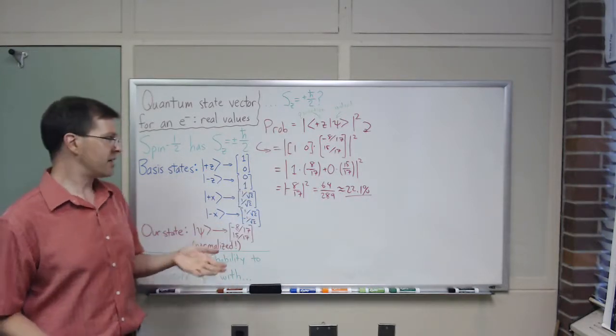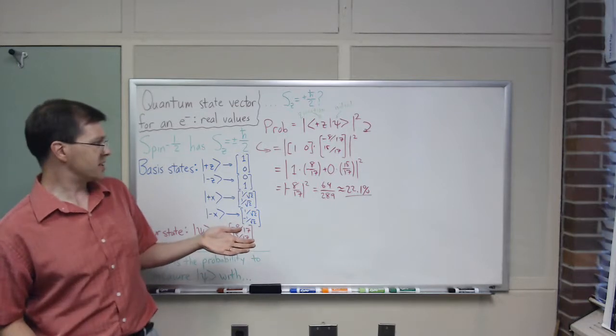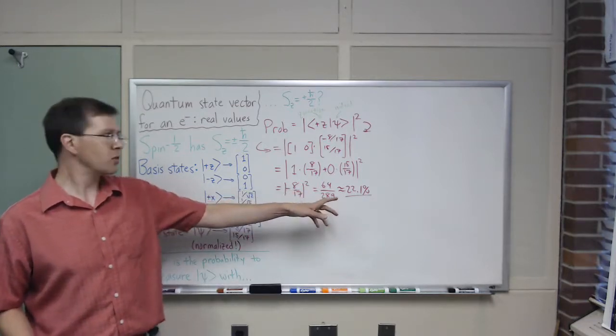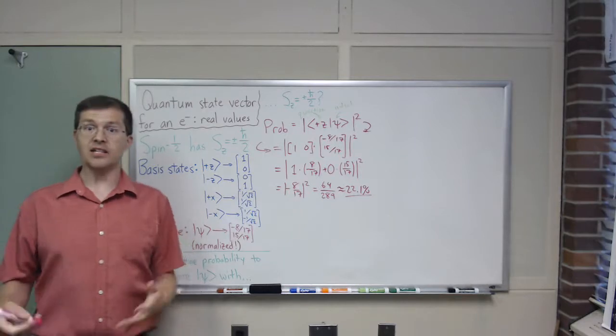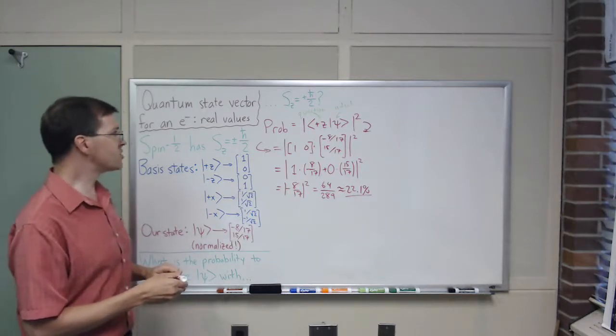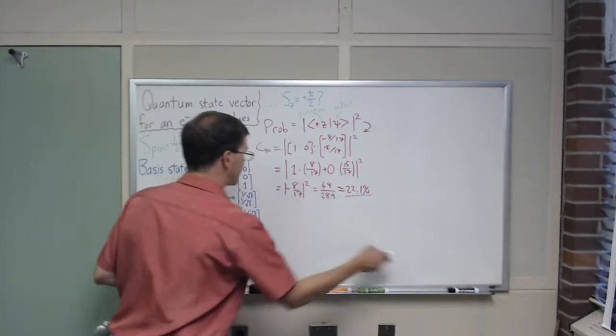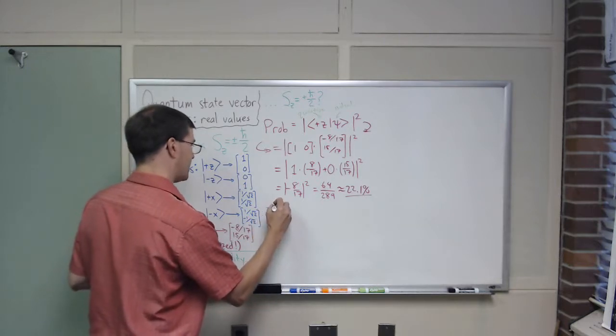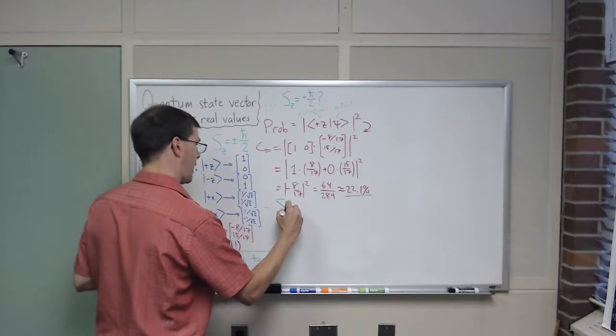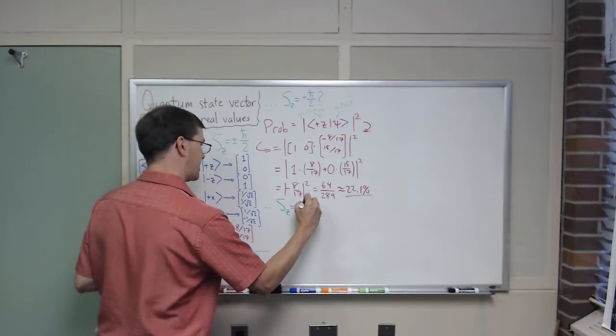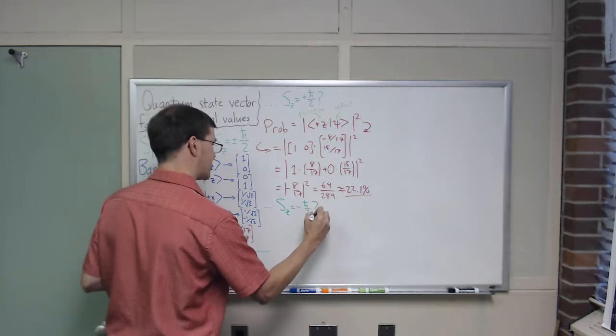Now you might say, hey, doesn't that immediately mean that, what is it, 78% or so, 77.9% will give me minus z? It does, but we can check that. Let's do that question, let's ask that question, let me ask you, what happens if z equals minus h bar over 2, if that's the question I'm asking.